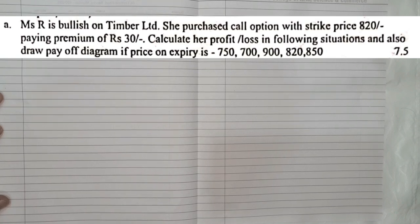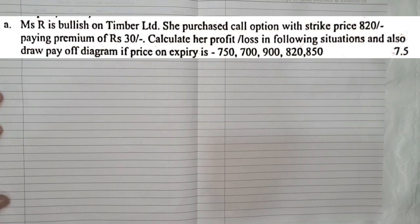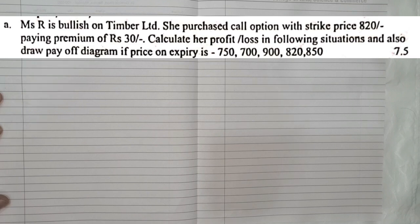The next question: Masar is bullish on Timber Limited. She purchased a call option with a strike price of 820, paying a premium of Rs. 30. Calculate her profit or loss in the following situations and also draw a payoff diagram if the price at expiry is 750, 700, 900, 820, and 850.